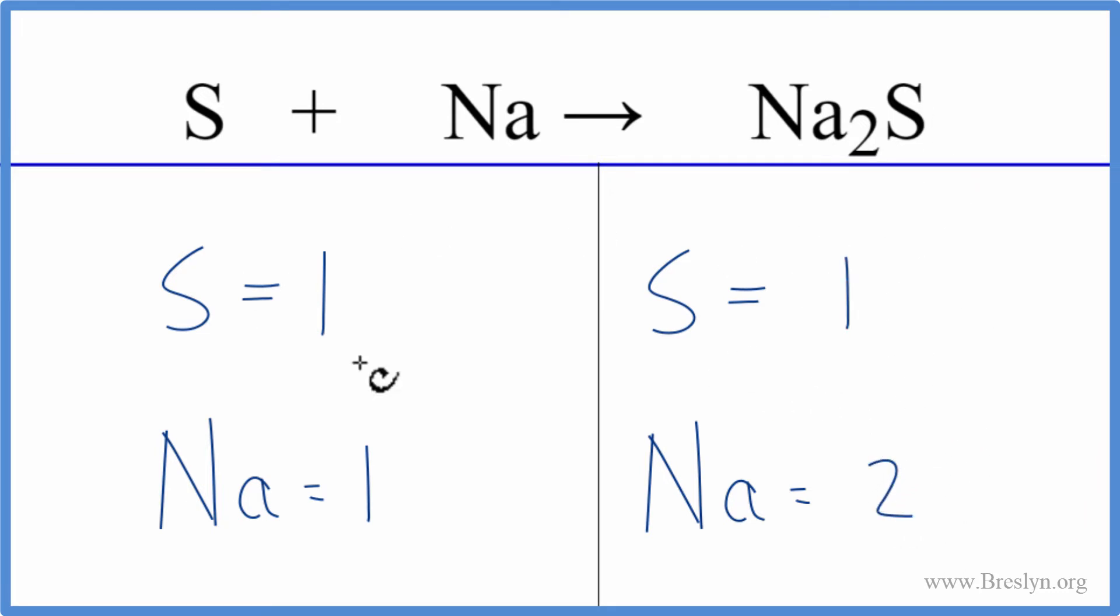On the product side, we have the two here, so we have two sodiums and then one sulfur. So it's not balanced. The sulfurs are the same, but the sodiums, they're different. So we can change the numbers in front. These are called the coefficients to balance the equation. What we can't change are the subscripts. We can't change these numbers afterwards.